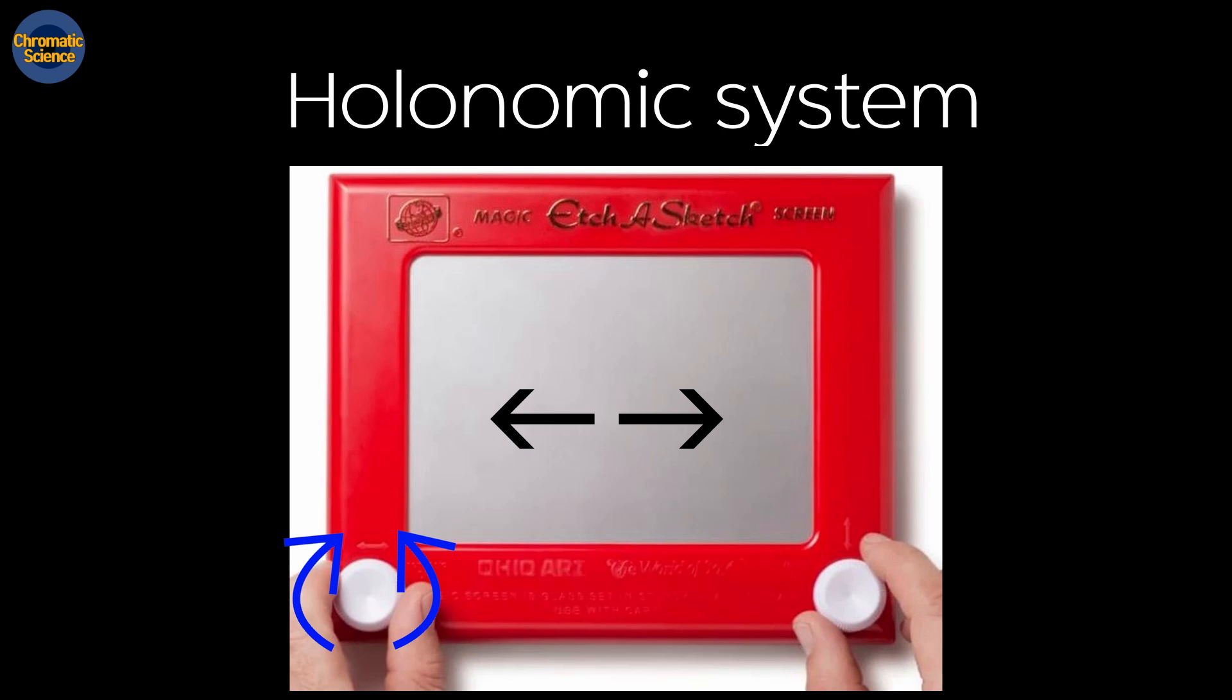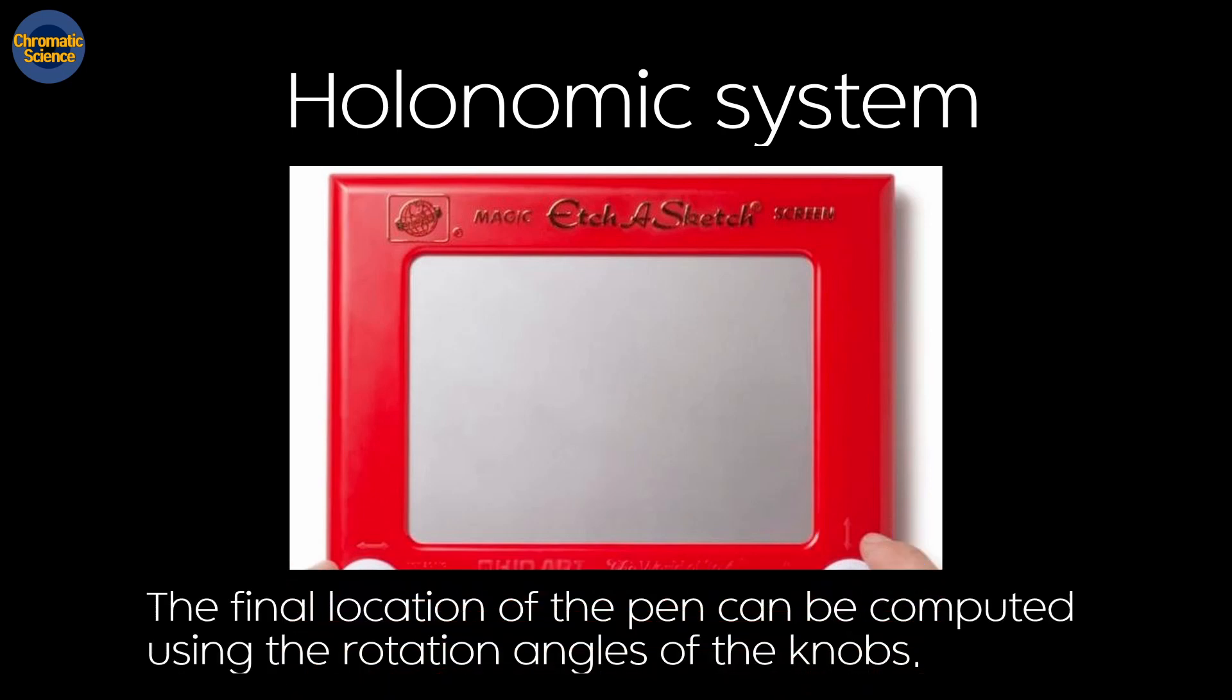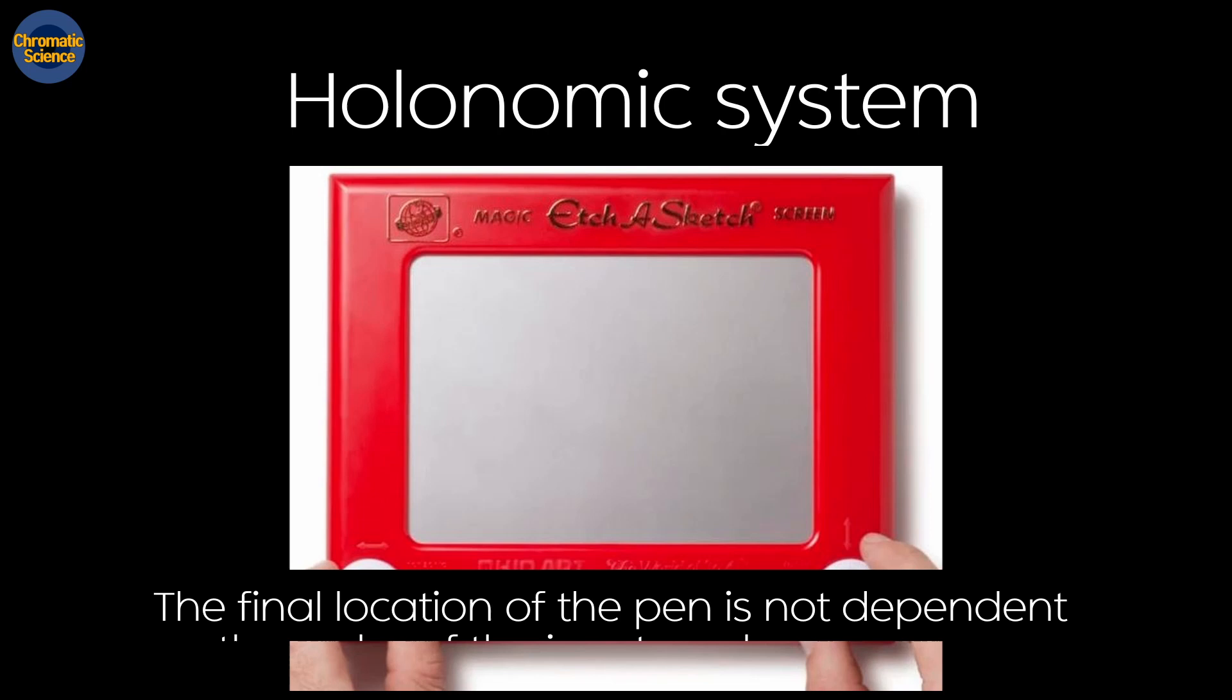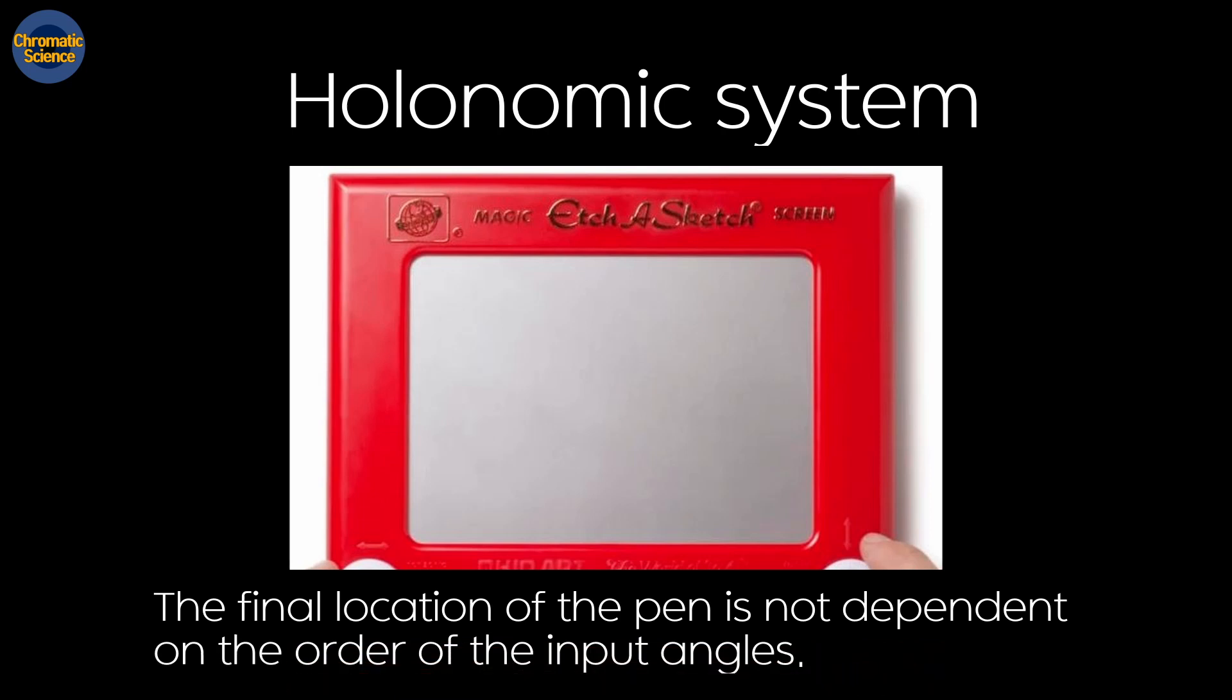Using the left knob, you can move the pen horizontally. Using the knob on the right, you can move the pen in a vertical direction. The final destination of the pen can be calculated using the rotation angles of the two knobs. Here's something interesting. The final location of the pen is not dependent on the order of the input angles.